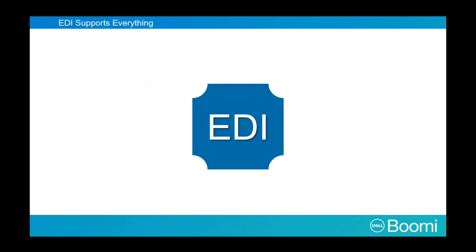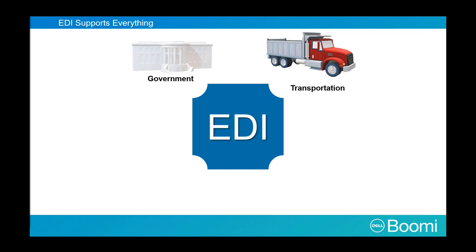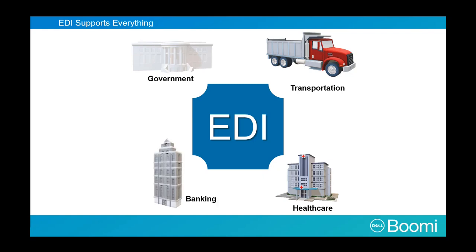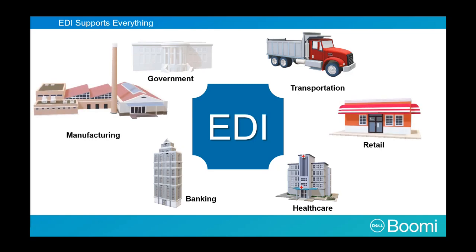Let's take a look at the business types EDI supports. In government, EDI exists in federal procurement. Transportation uses EDI to track motor carrier load tenders and request shipments. In healthcare, EDI is used to file medical claims for insurance companies and to adhere to HIPAA standards. It exists in banking for accepting payment information. Finally, EDI is heavily used in manufacturing and retail for handling invoices, purchase orders, and shipment notices.